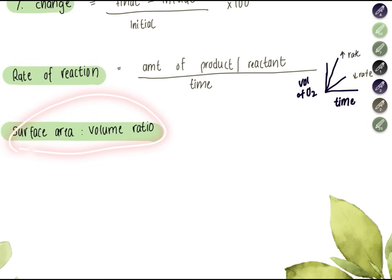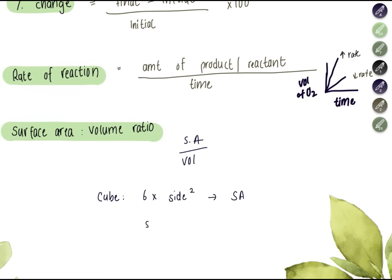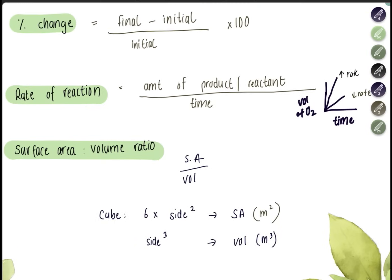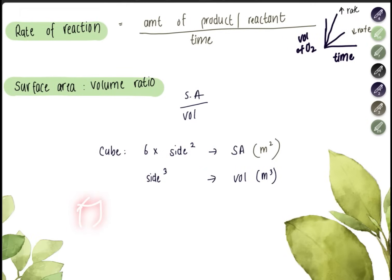Surface area to volume ratio is useful in diffusion or cell biology. You simply divide surface area by volume. For a cube, surface area is 6 × side², because a cube has six sides and side² gives you the area of each face. Volume is side³, with units of cm³ or m³, while surface area is in cm² or m².